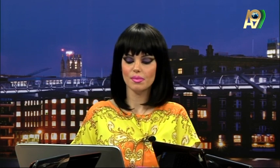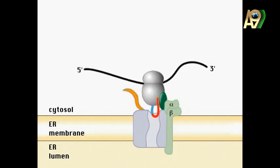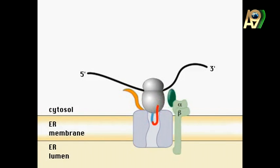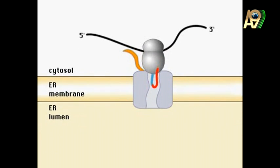After the receptor binding process is done, translocon opens its gate and starts its job. The post-translation process starts again and amino acid chains start to be synthesized into endoplasmic reticulum lumen through the translocon protein.